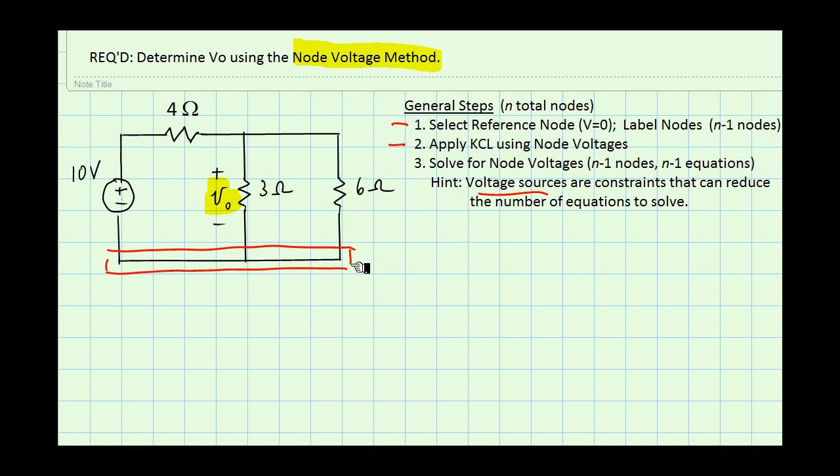There is a node between the 10 volt source and the 4 ohm resistor, and there is another node that connects the three resistors to each other. There are three nodes in this problem.